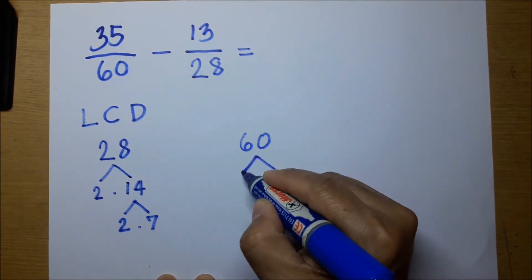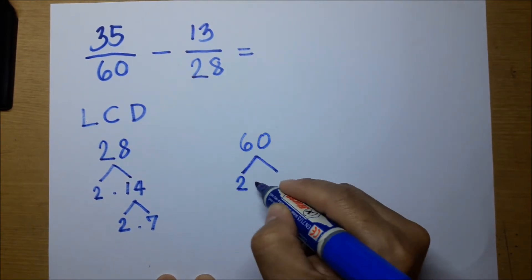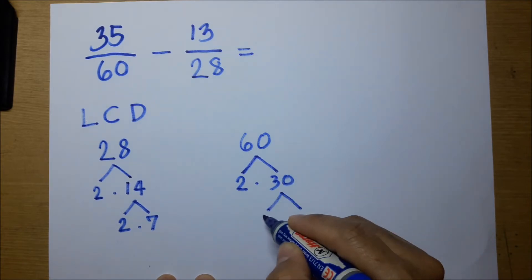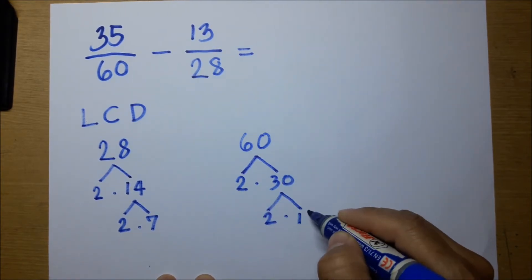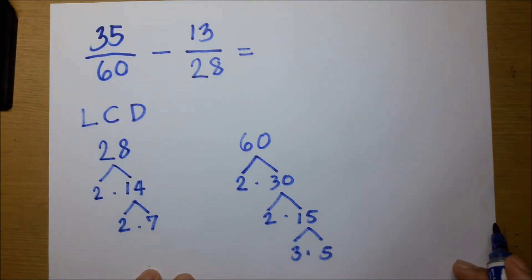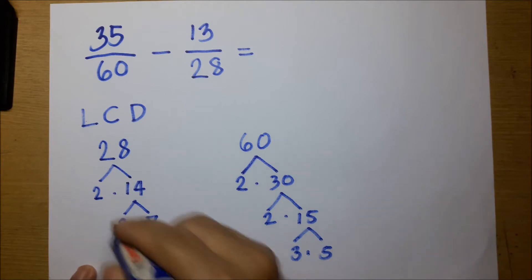Pag 60 naman, 2 times 30. Kukunin natin ang 2 times 15, and then 3 times 5. So nandito na ngayon yung mga factors of 60.